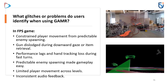In the first-person shooter games, users identified several issues as well. Predictable enemy spawning patterns limited player movement, reducing the gameplay challenge. The gun would become dislodged during a downward gaze or while retrieving items, disrupting the shooting experience. Some participants also mentioned that fast turns in the game led to performance lags and loss of hand tracking, affecting responsiveness. These issues underscore areas for improvement and demonstrate how GAMR can help identify critical gameplay problems.